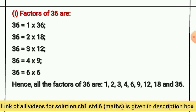Factors of 36 — यानि कि all the factors of 36 are 1, 2, 3, 4, 6, 9, 12, 18, and 36.